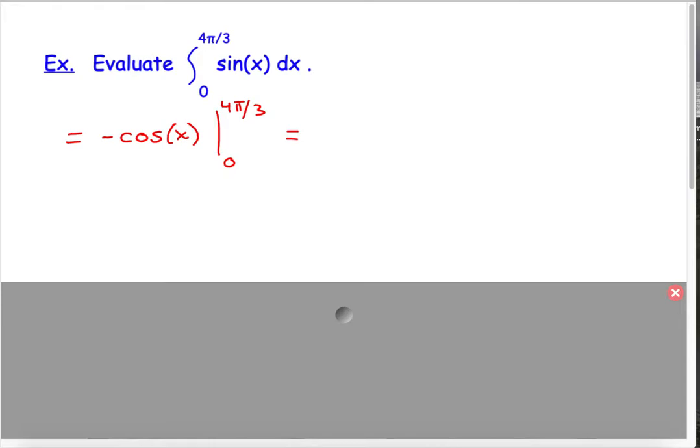So, now, I've said this before, you should use parentheses when you're evaluating. So, let's put a set of parentheses, and let's plug in 4π over 3. So, we have negative cosine 4π over 3, close that parentheses, minus, and then another parentheses, negative cosine, and we plug in 0. And notice, we won't make mistakes if we have the extra parentheses, especially because we're subtracting here.